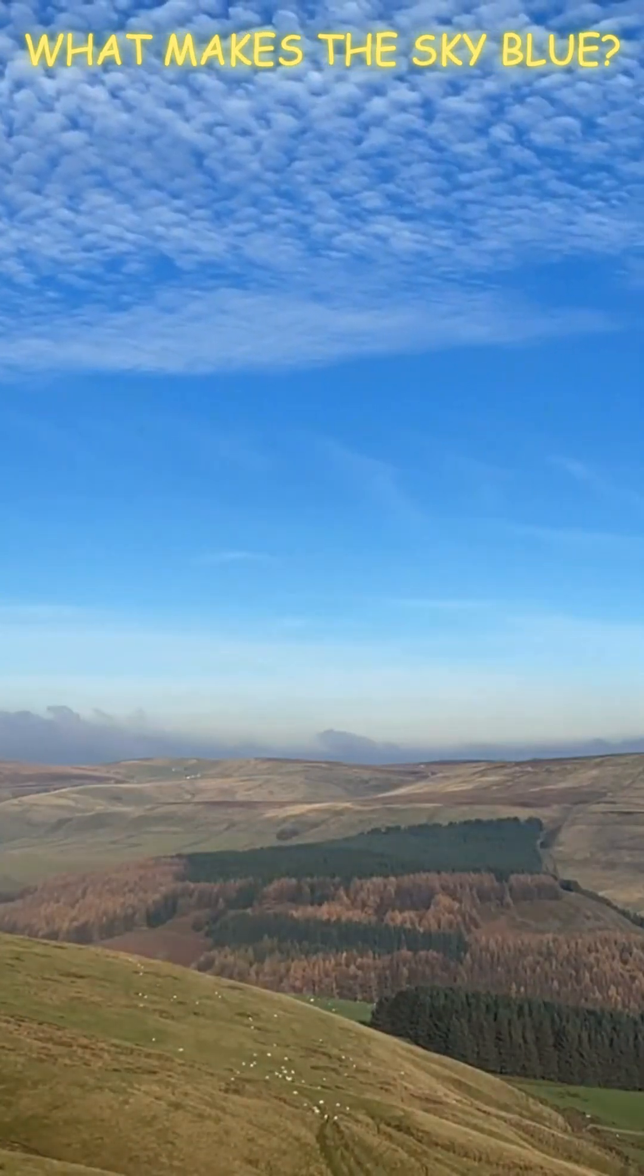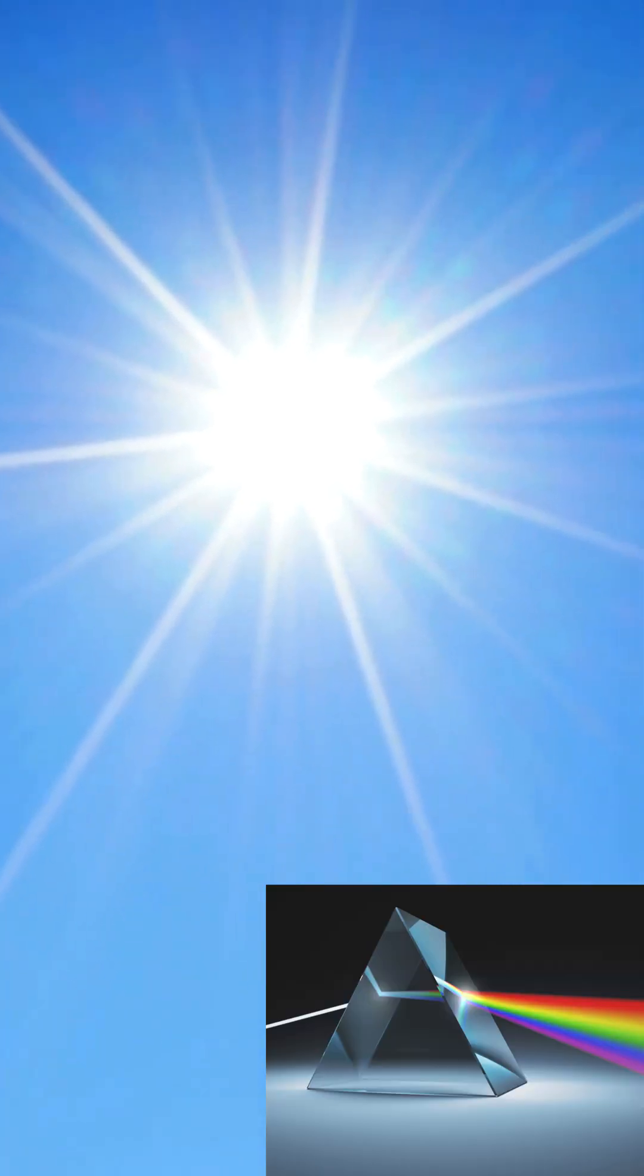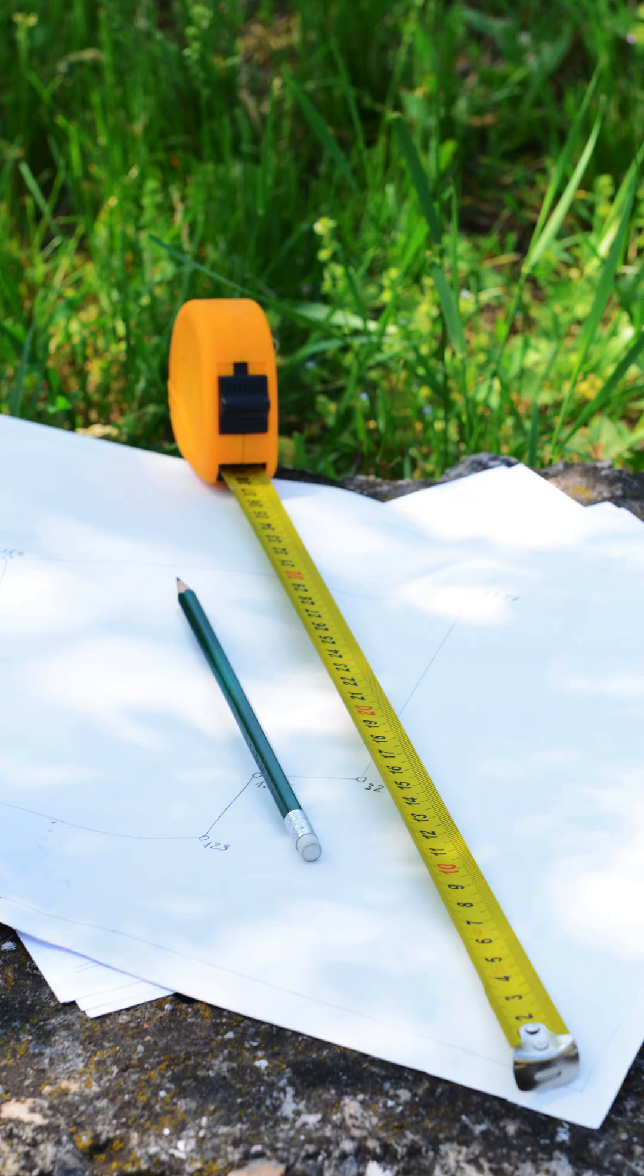Have you ever wondered why the sky is blue during the day? The sun appears white because it contains all colors of the visible spectrum. You can see this by holding up a white sheet of paper outdoors.